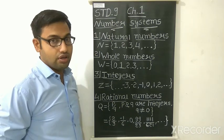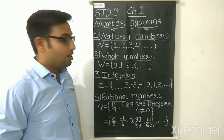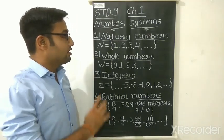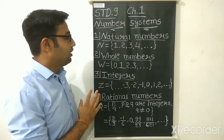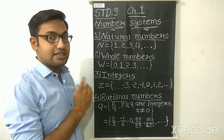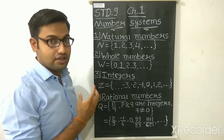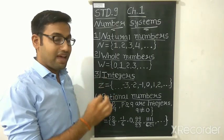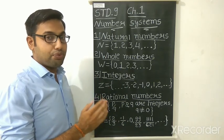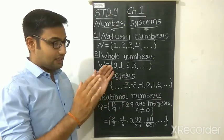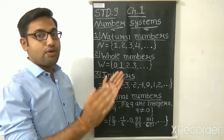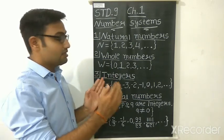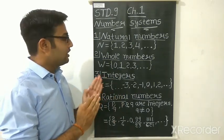So till now you have studied the natural numbers, whole numbers, and integers. We will see what these number sets are and what properties they have. What basically is a set? A set is a combination of objects — like your subjects: science, maths, English, social. If we put all together in a bracket or box, that is called a set of subjects. In the same way, numbers can be put together, and that is called a set.